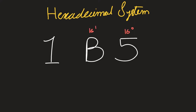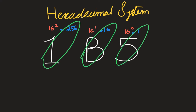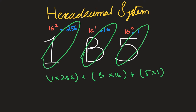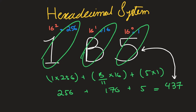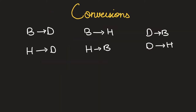For 1B5, this is base raised to the power of position for each digit, giving place values of 1, 16, and 256. So we calculate: 1×256 + B×16 + 5×1. B in hexadecimal is 11, so this becomes 256 + 11×16 + 5×1 = 256 + 176 + 5 = 437. So the hexadecimal number 1B5 is 437 in denary.